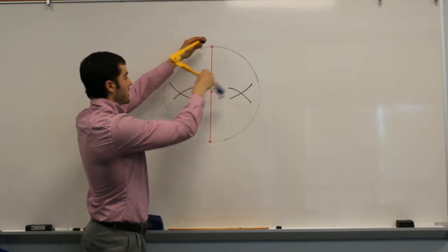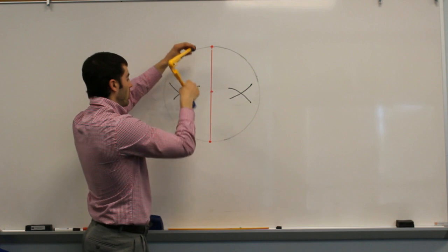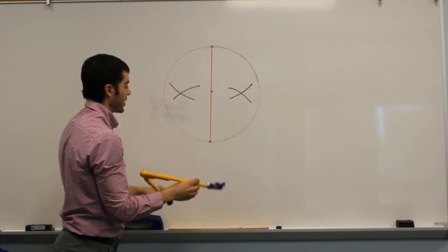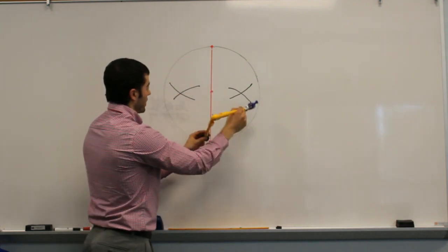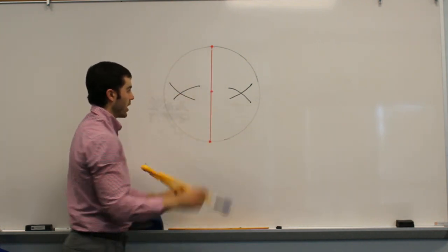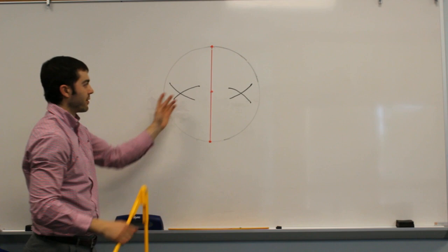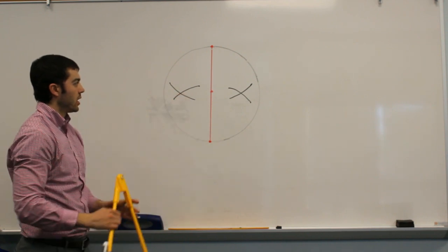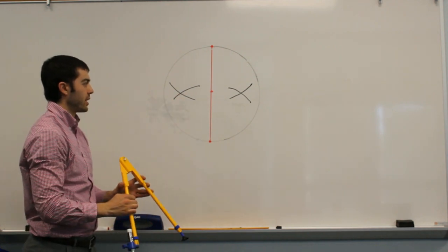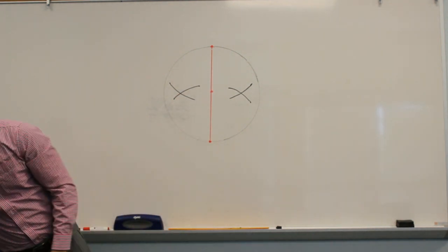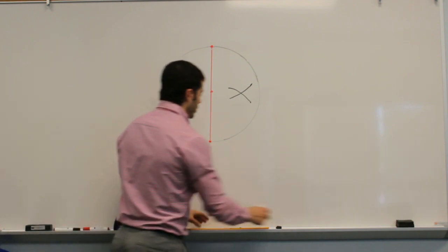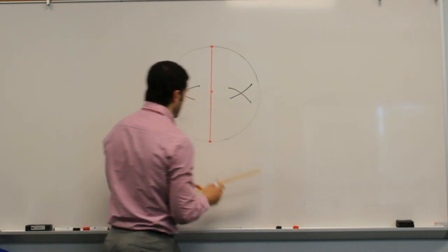We came from the top, did our two arcs, one on each side, keeping the compass the same width, and did one arc on each side. Now we have two sets of intersecting arcs, so from there all we have to do is connect our intersection points.